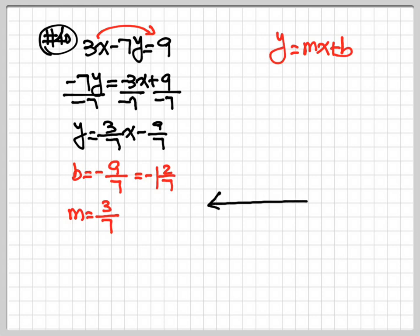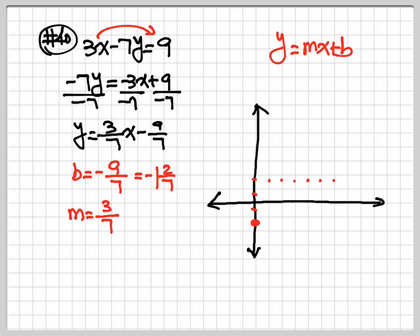So let's draw my x and y axes. Go to my b first: negative 1 and 2 over 7 — you estimate, so somewhere around negative 1. That's my starting point. After that, go to your numerator for the slope — numerator is positive 3, so you go up 3 spaces: 1, 2, 3. Denominator always goes to the right, so go right 7: 1, 2, 3, 4, 5, 6, 7. That's my ending point. After that, just draw a line to connect the two points. That's the graph.